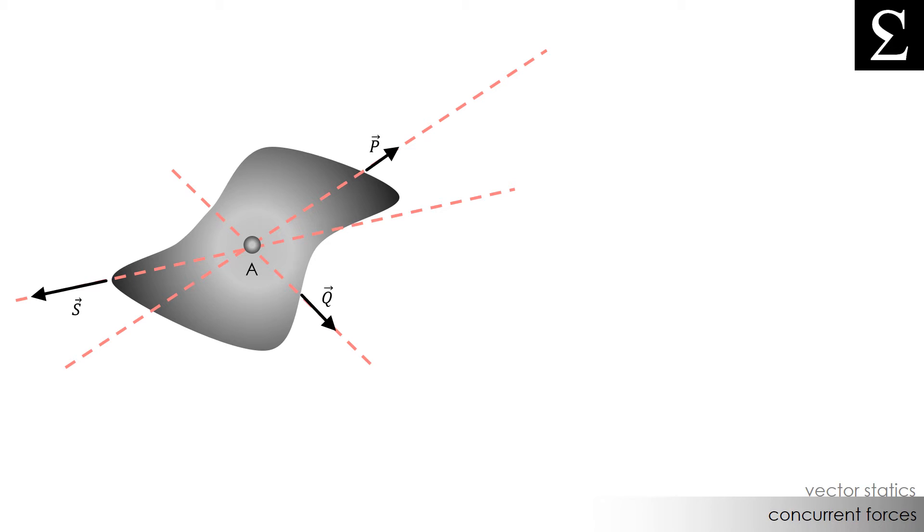Now let's say I added another force to this body. I'll name this force T. If I drew out force T's line of action, notice how it does not intersect at the common point A.